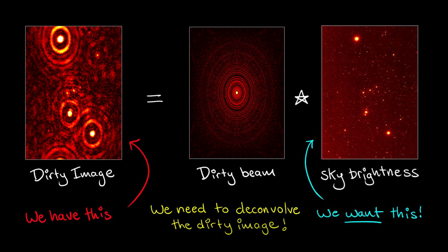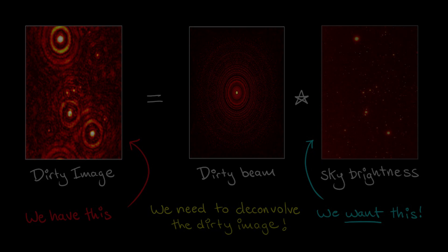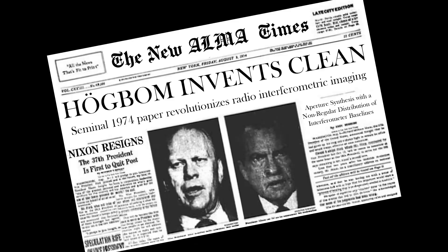There are different ways to approach deconvolution in order to compensate for the incomplete UV sampling, but one of the most robust is the CLEAN algorithm, which was first published by Jan Högbom in 1974. CLEAN uses an iterative approach to derive a model of the true sky brightness.